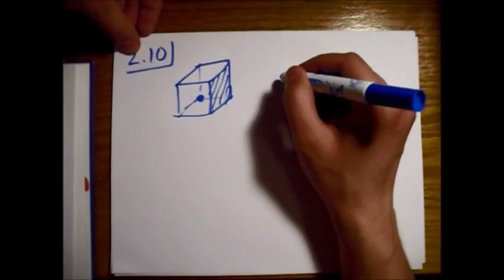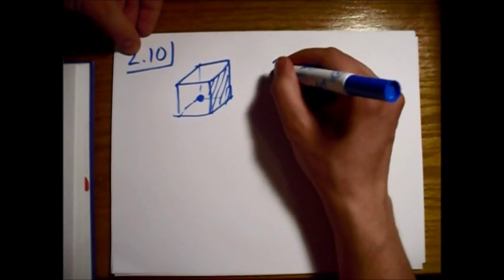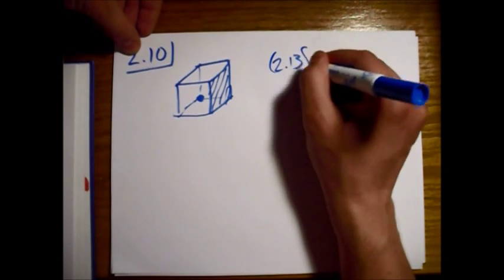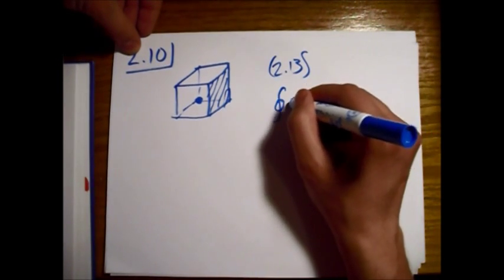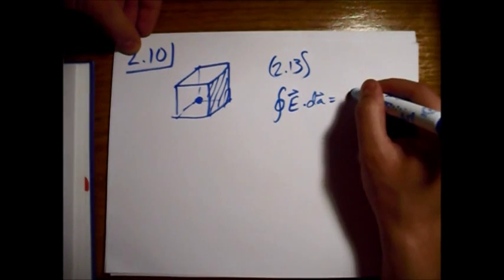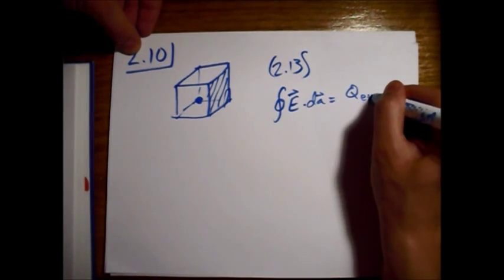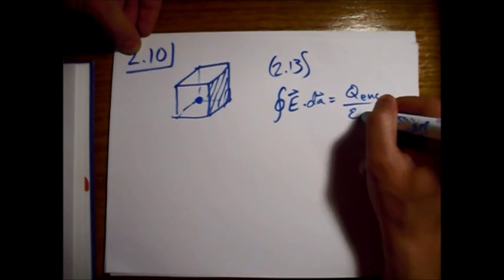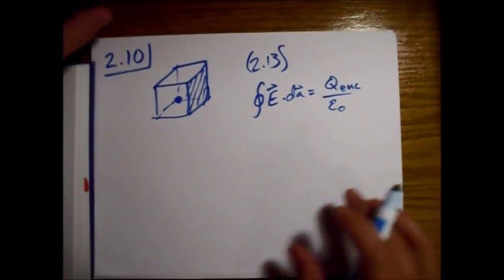Alright, so Gauss's Law, this is equation 2.13 in the book. It tells us that the integral of E·dA is equal to the charge enclosed over permittivity of free space.